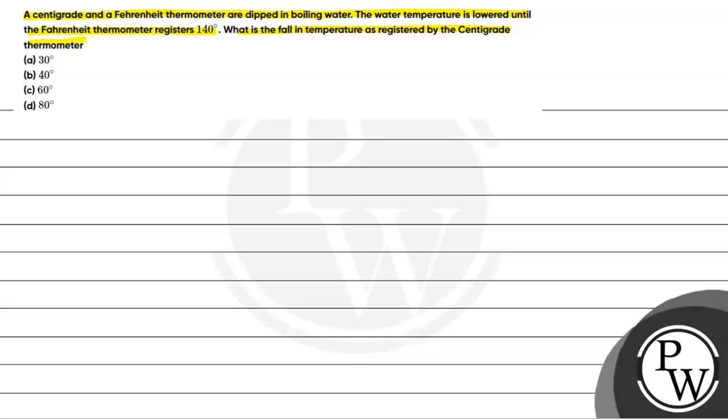Now to answer this question, first we will discuss here the key concept. The key concept is the relation between Fahrenheit temperature and degree Celsius temperature. Two scales we can relate here by the given expression: degree Fahrenheit minus 32 divided by 180 equals degree Celsius minus 0 divided by 100.